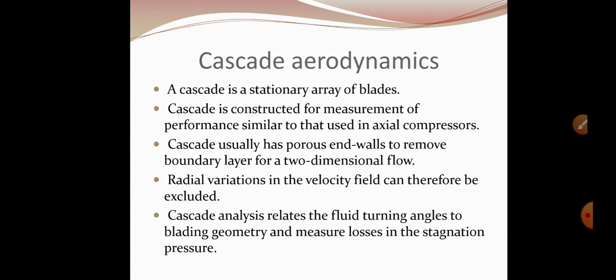Cascade usually has porous end walls to remove boundary layer for a two-dimensional flow. Radial variation in the velocity field can therefore be excluded. Cascade analysis relates the fluid turning angle to blading geometry and measures losses in the stagnation pressure.